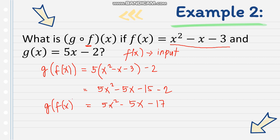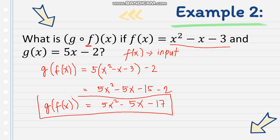We used f of x to evaluate the function g of x. So g of f of x equals 5x squared minus 5x minus 17, and that is our final answer.